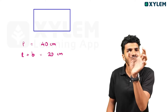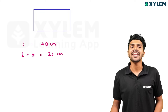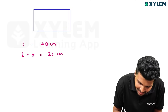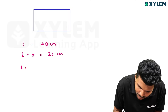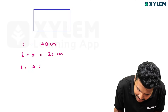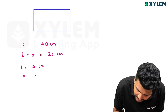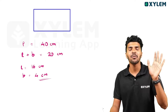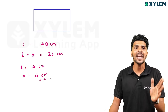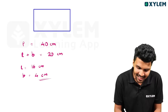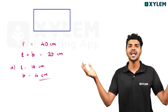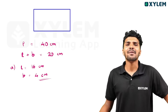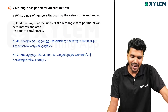So the answer for Part A is simple. You just need to find two numbers that add up to 20. That's the answer for Part A. Now let's go to Part B.